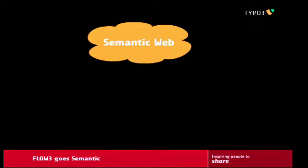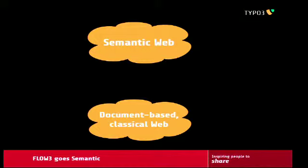You might now have a problem: what I talked about is the Semantic Web, which has cool ideas, but it is a completely different world from the document-based classical web. They both use HTTP so the foundations are the same, but it's like a completely different world, and that's actually a big problem. So if you browse the document-based classical web, how do you get to the Semantic Web from there?